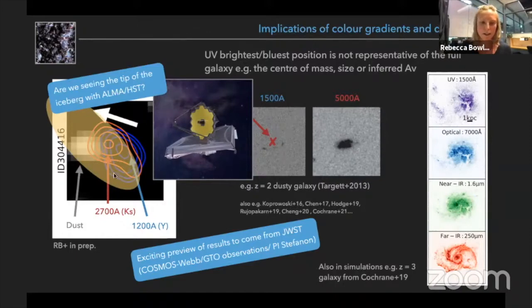And in fact when we look deeper with James Webb we're going to see a much larger extended component to this source, where we're only seeing the very unobscured parts pop out in the UV, and again the very brightest part in the far infrared. And with that I will end and take questions, thank you.